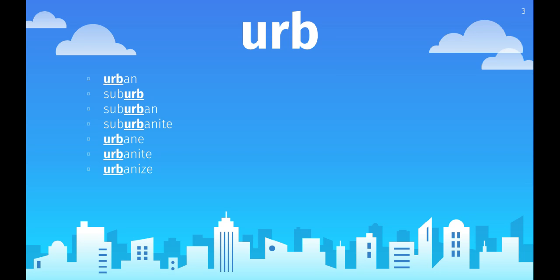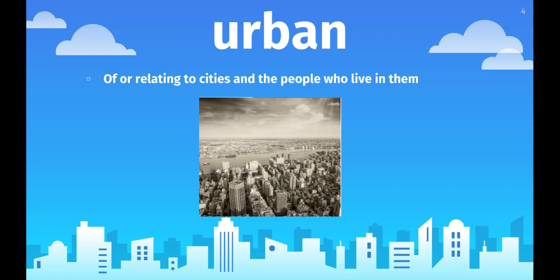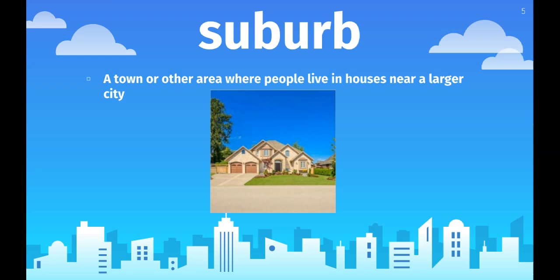Your first word is urban, meaning of or relating to cities and the people who live in them. On your homework you see two different columns — urban is at the top of one. In the space underneath, I want you to draw a picture of what an urban area may look like.